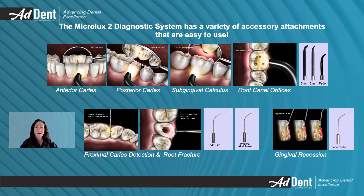The endolite or proximal attachment are used to visualize interproximal caries or root fractures. The perioprobe is used to detect the depth of the periodontal pocket and gingival recession.